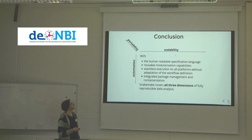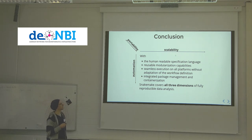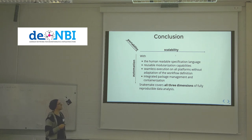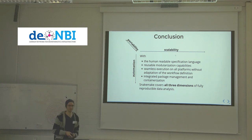To conclude, Snakemake tries to achieve reproducibility by covering three dimensions — automation, scalability, and portability — via a human-readable specification language, reusable modularization and definition capabilities, seamless execution on all platforms without adapting the workflow definition, and integrated package management.